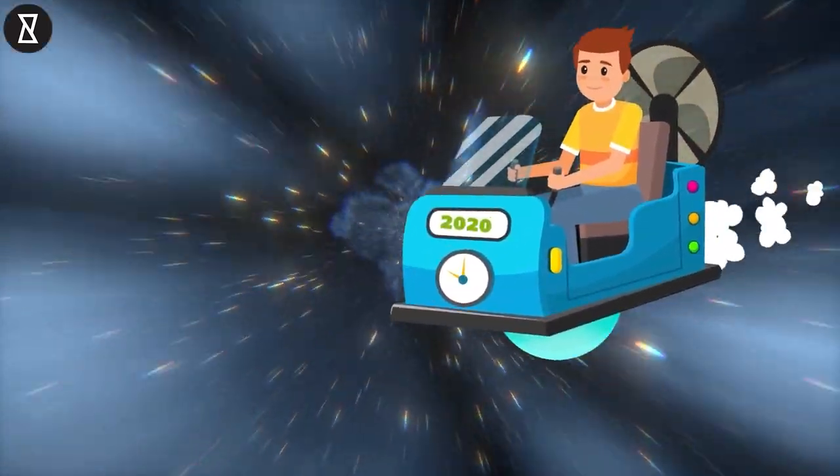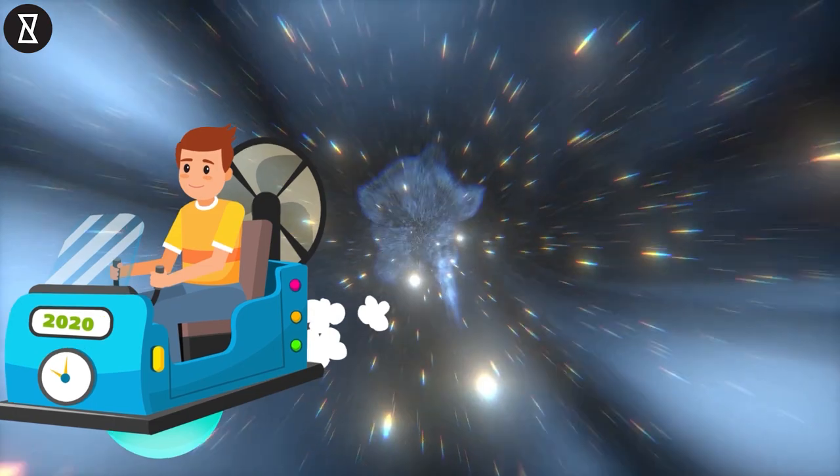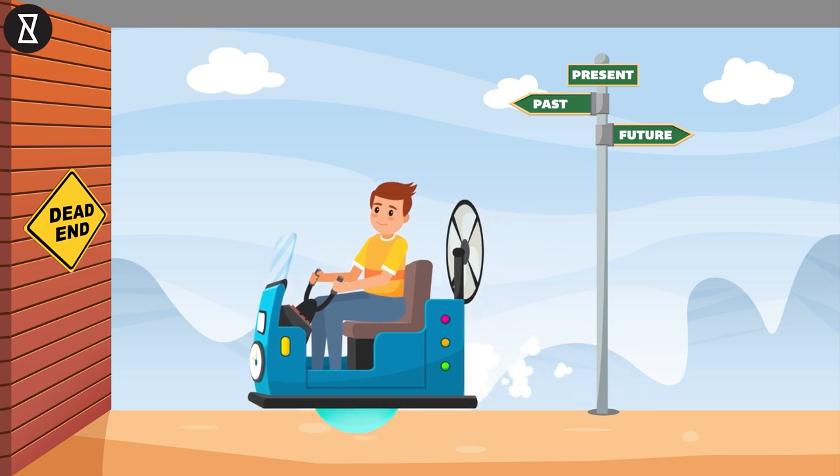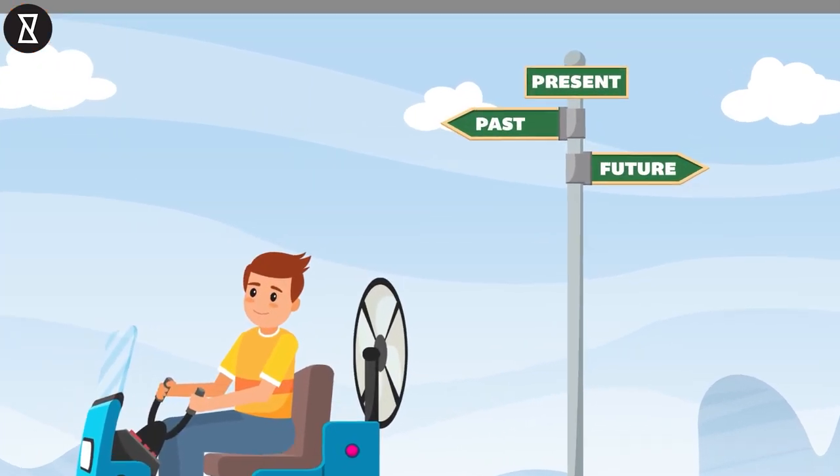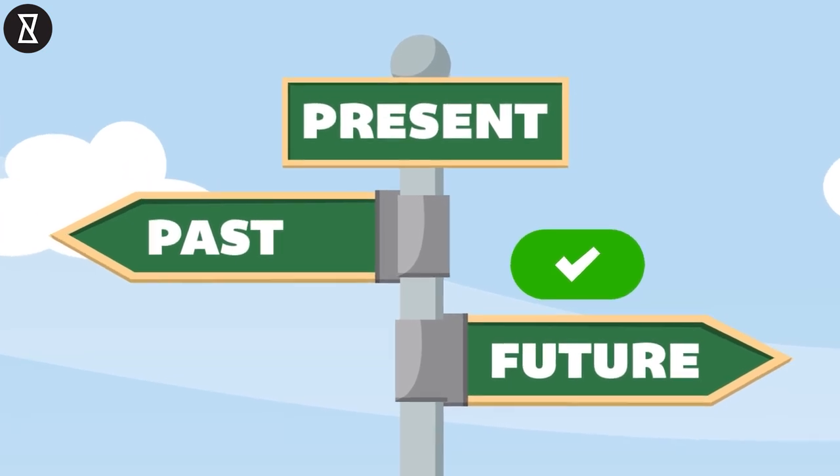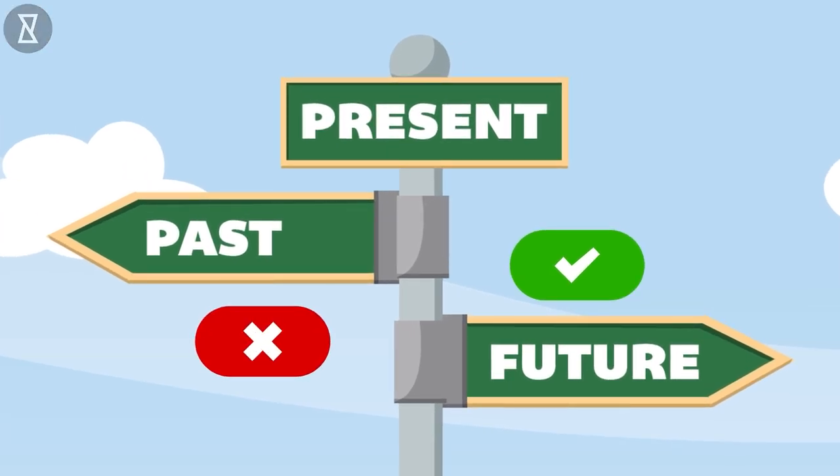If in fact these scientists are correct and assuming traveling to the past would cause a paradox, then we have our answer. Time travel to the past is impossible. So to answer your question is time travel possible? To the future, yes. But to the past, it's a no. For now.